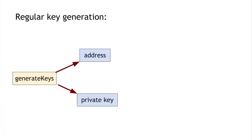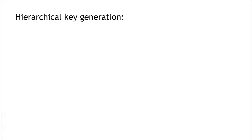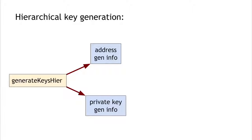A better solution is to use a hierarchical wallet, which requires a bit of cryptographic trickery. Normally, a key generation operation generates a public key and a secret key. With hierarchical key generation, we instead generate 'address generation info' and 'private key generation info.' Given the address generation info and any integer i, we can apply a gen-address operation to produce the i-th address in a whole series. Similarly, given private key generation info and integer i, we generate the i-th key in the sequence.